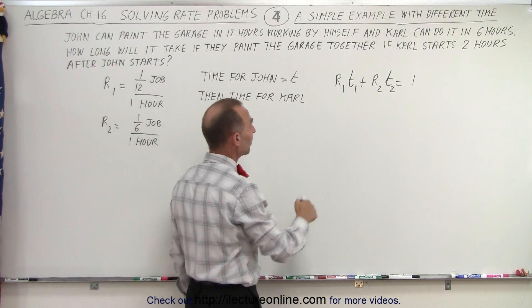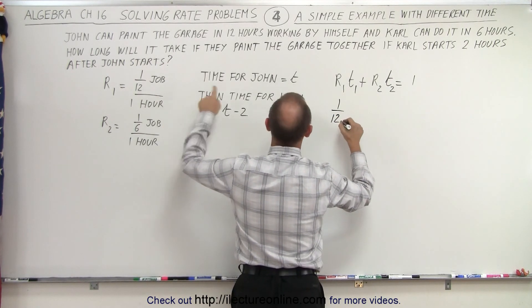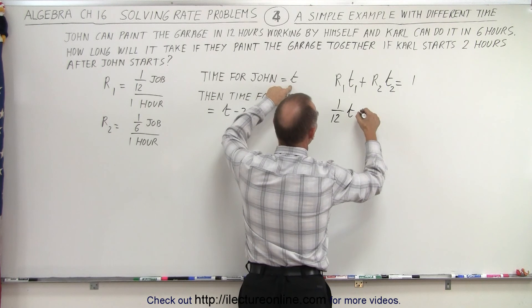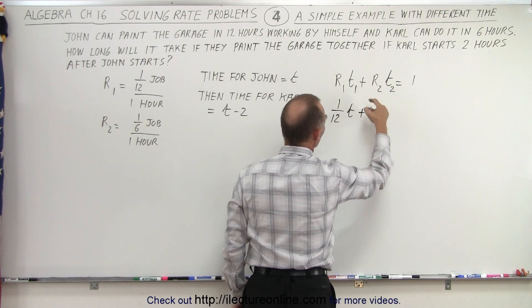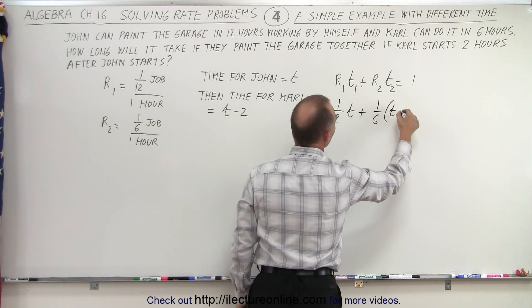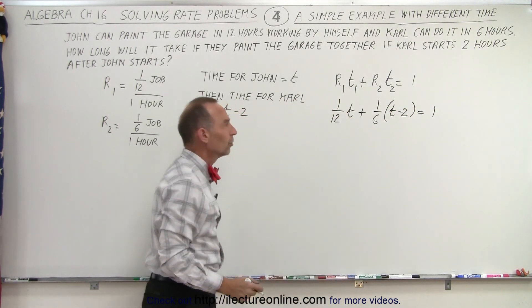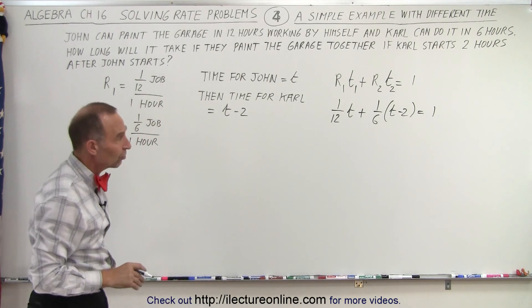So the equation then becomes as follows: the rate for John is 1/12 and the time can be set equal to t, plus the rate for Carl is 1/6 and the time will be t minus 2, and that equals the whole job done. Notice that does change the equation a bit.